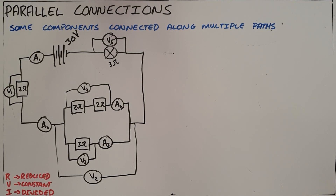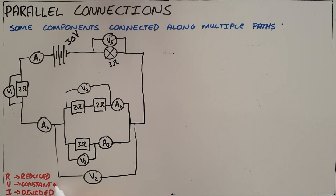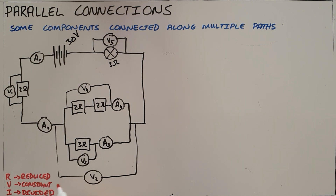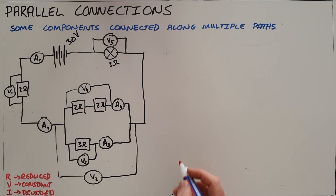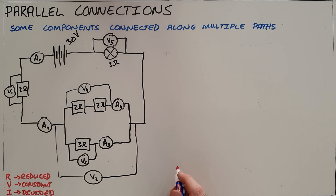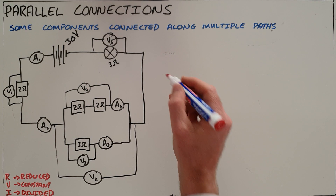Once we understand that current is always divided, voltage is always constant, and resistance is reduced in a parallel connection, we can once again use Ohm's law to perform calculations to find unknowns in these circuits or connections.